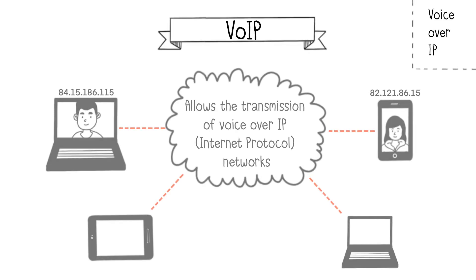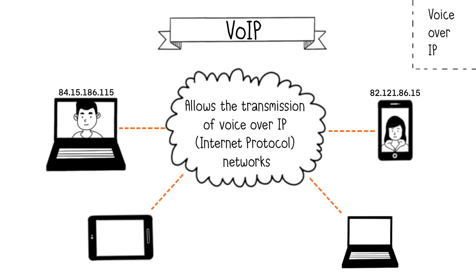VoIP, or Voice over IP, refers to a communication system that allows the transmission of analog audio signals. In simpler terms, it enables phone calls via an IP network and or the internet. These VoIP phone systems are accessible from IP phones, as well as smartphones, computers, and other network-connected devices using VoIP applications, often called soft phones.